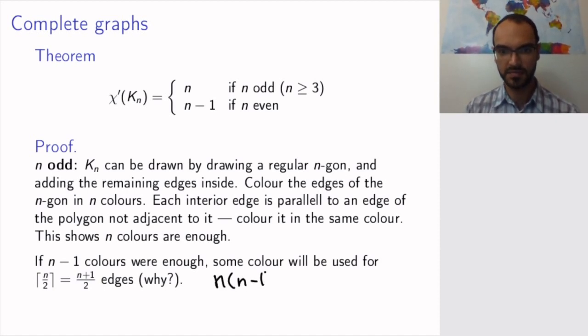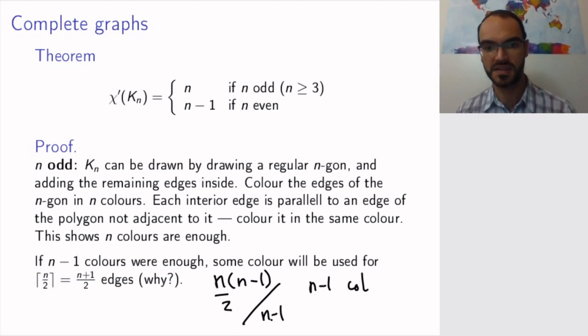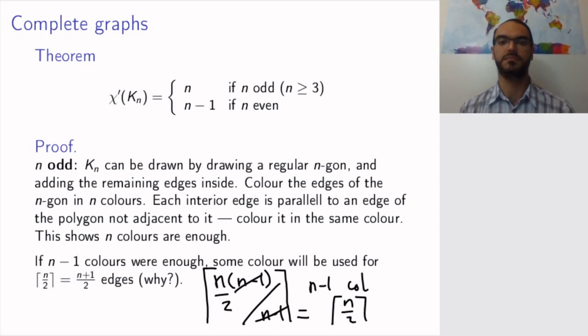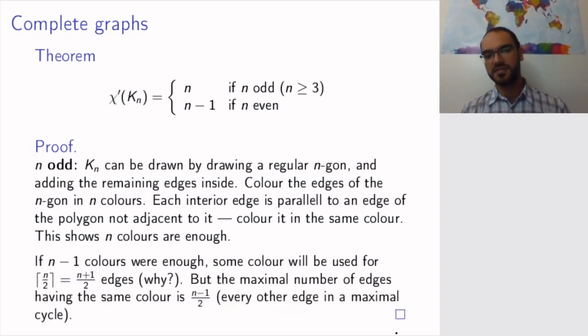So you have n(n-1)/2 edges. So if you are using n-1 colors, then at least this number divided by n-1 edges will be colored in the same color. And this will not be an integer, so you take the smallest integer greater than or equal to it. And that is precisely by canceling, that's precisely n/2. And since n is odd, we in fact know that this number is (n+1)/2 which is even divided by 2. So we're going to need at least this many edges colored by the same color.